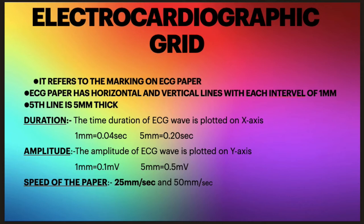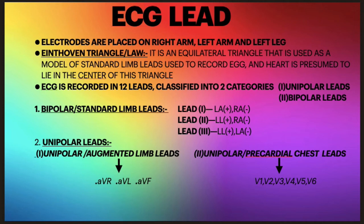Regarding the speed of the paper: there are two speeds — 25 mm per second and 50 mm per second. The 25 mm per second speed is mostly used, but if the heart rate or rhythm is very fast, then we use the 50 mm per second speed.